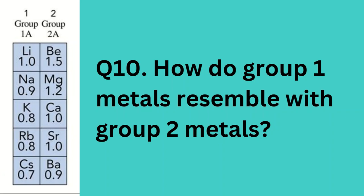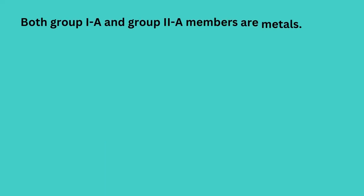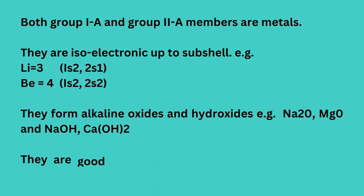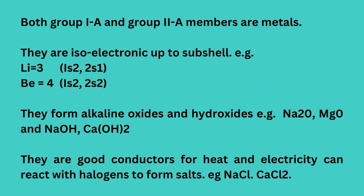Question 10: How do group 1A metals resemble group 2A metals? Both group 1A and group 2A members are metals. They are isoelectronic up to a subshell — for example, Li (Z=3): 1s2 2s1; Be (Z=4): 1s2 2s2. They form alkaline oxides and hydroxides, for example Na2O, MgO, NaOH, and Ca(OH)2. They are good conductors of heat and electricity and can react with halogens to form salts, for example NaCl and CaCl2.